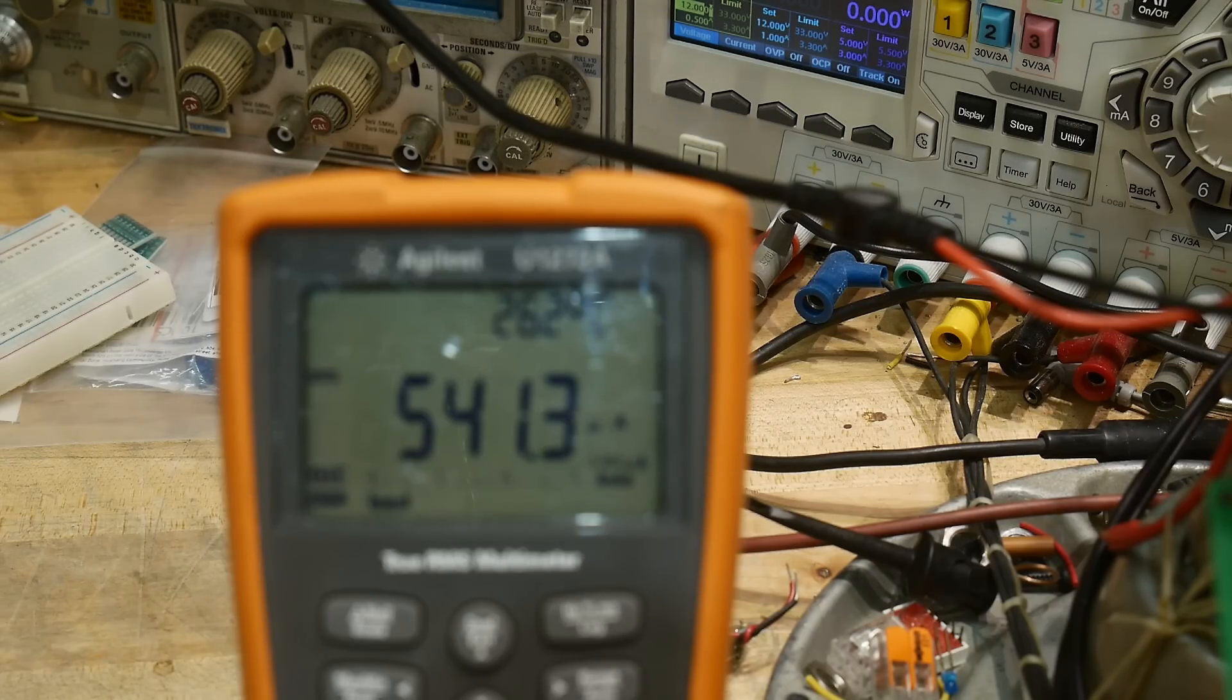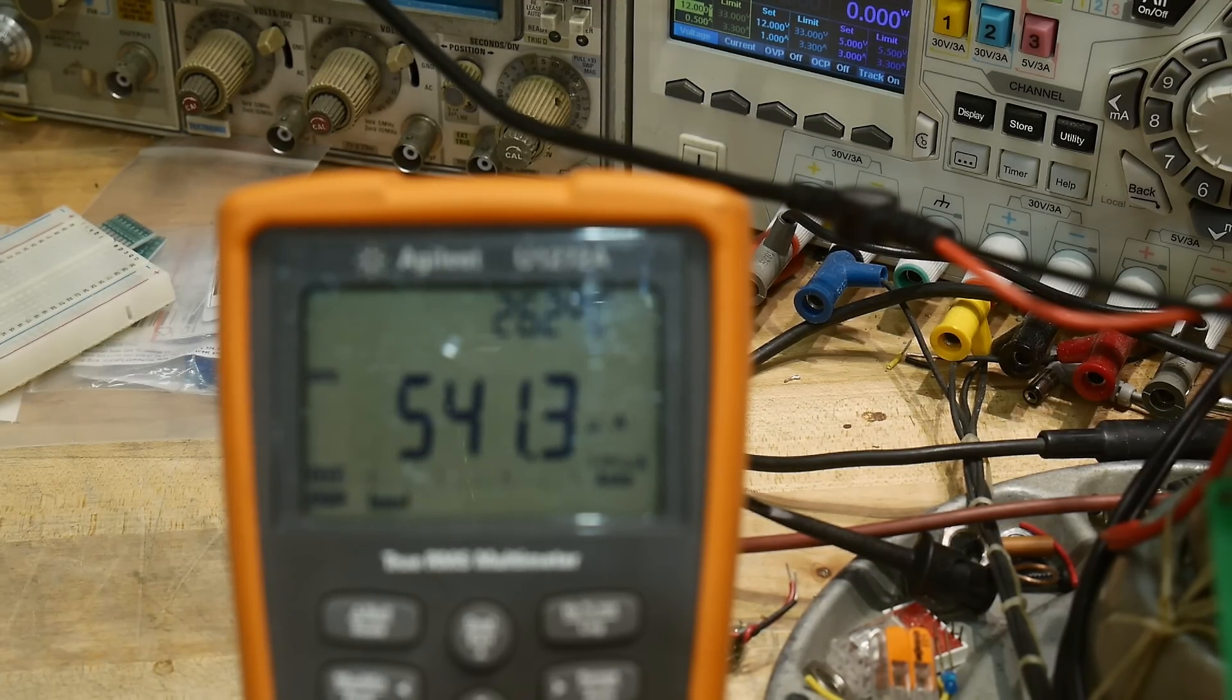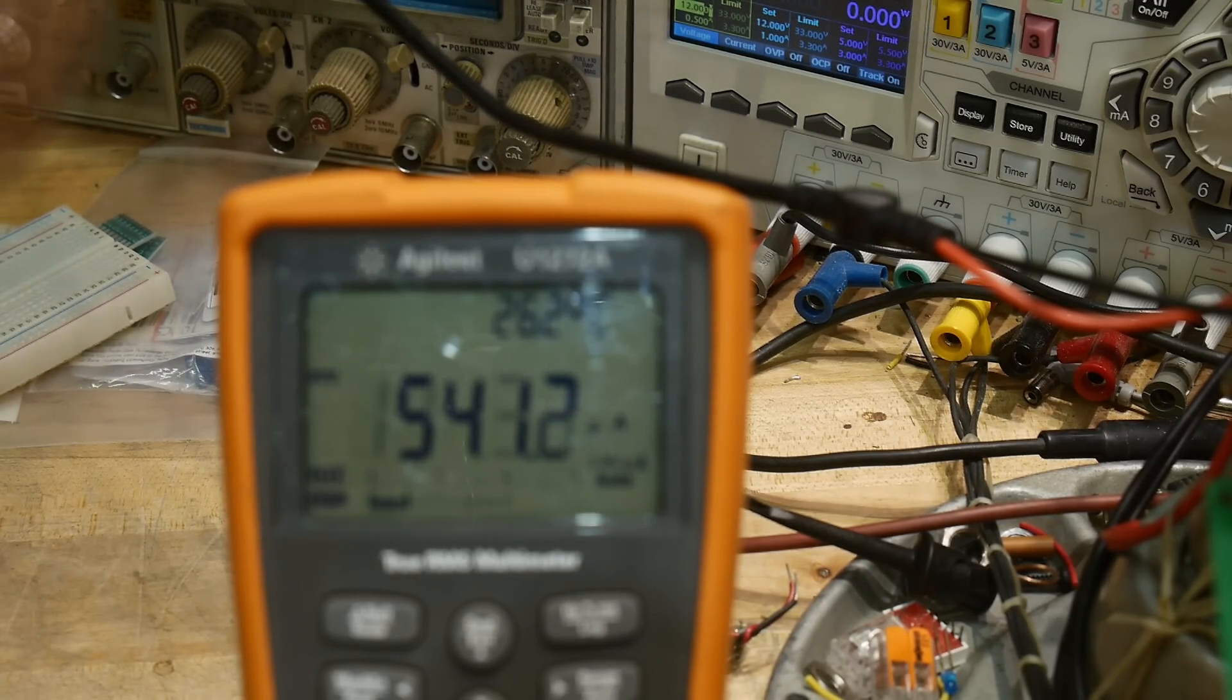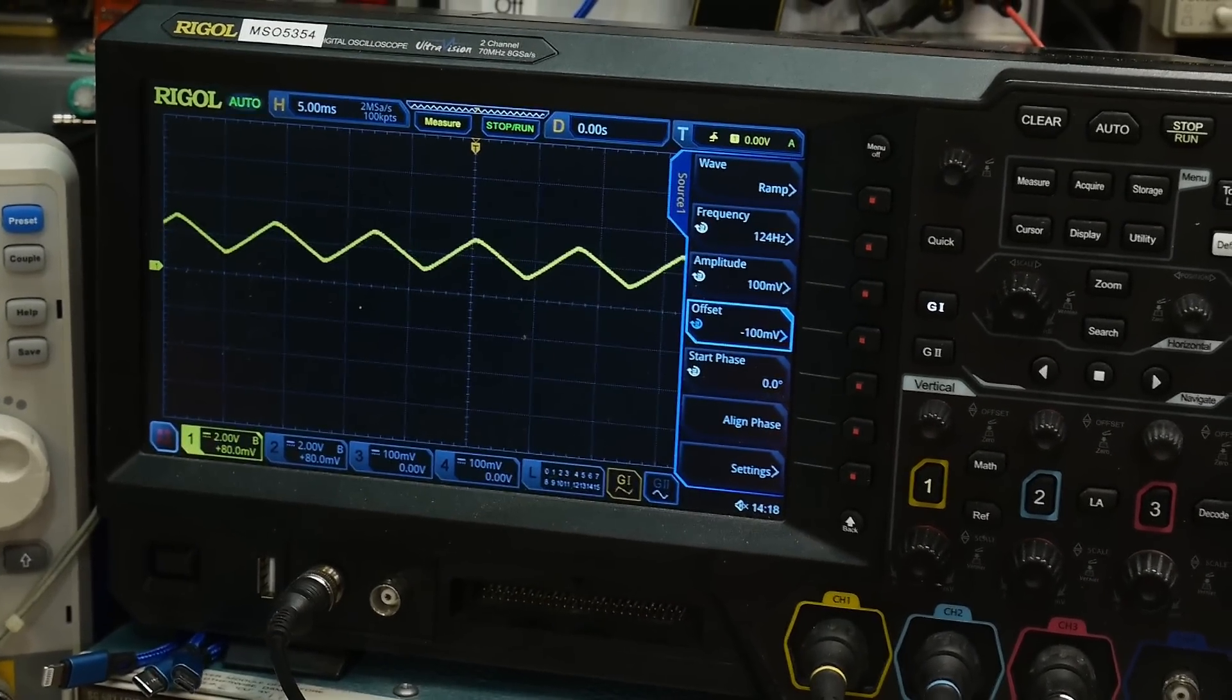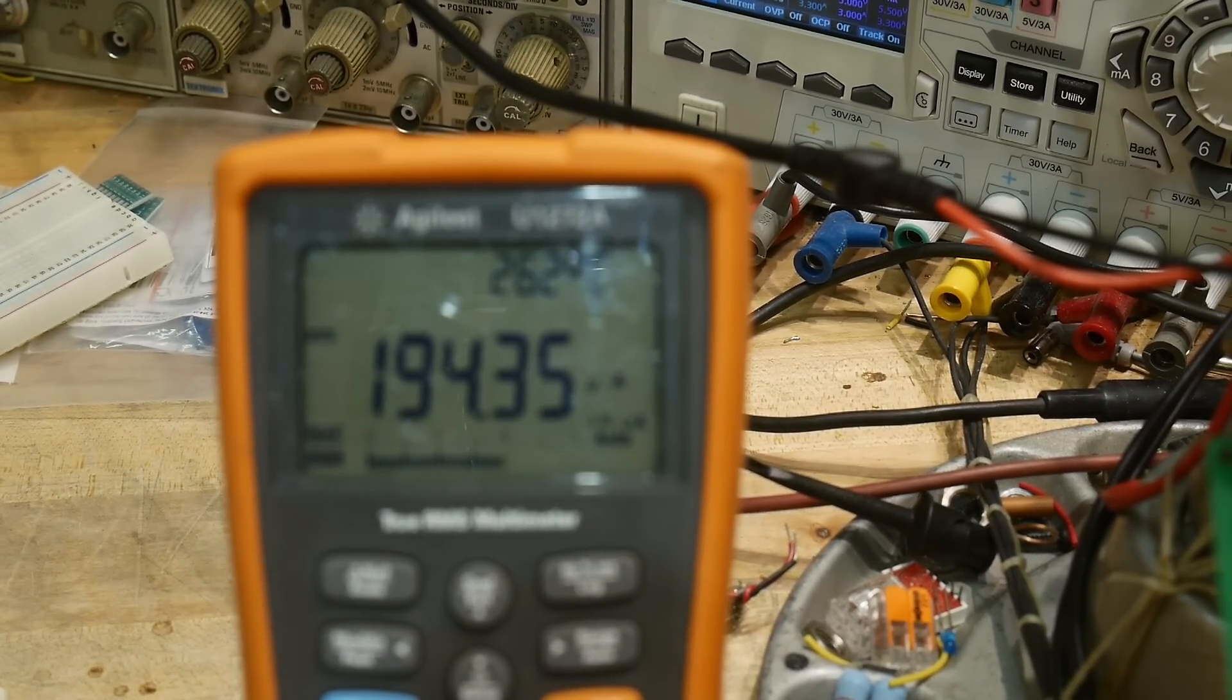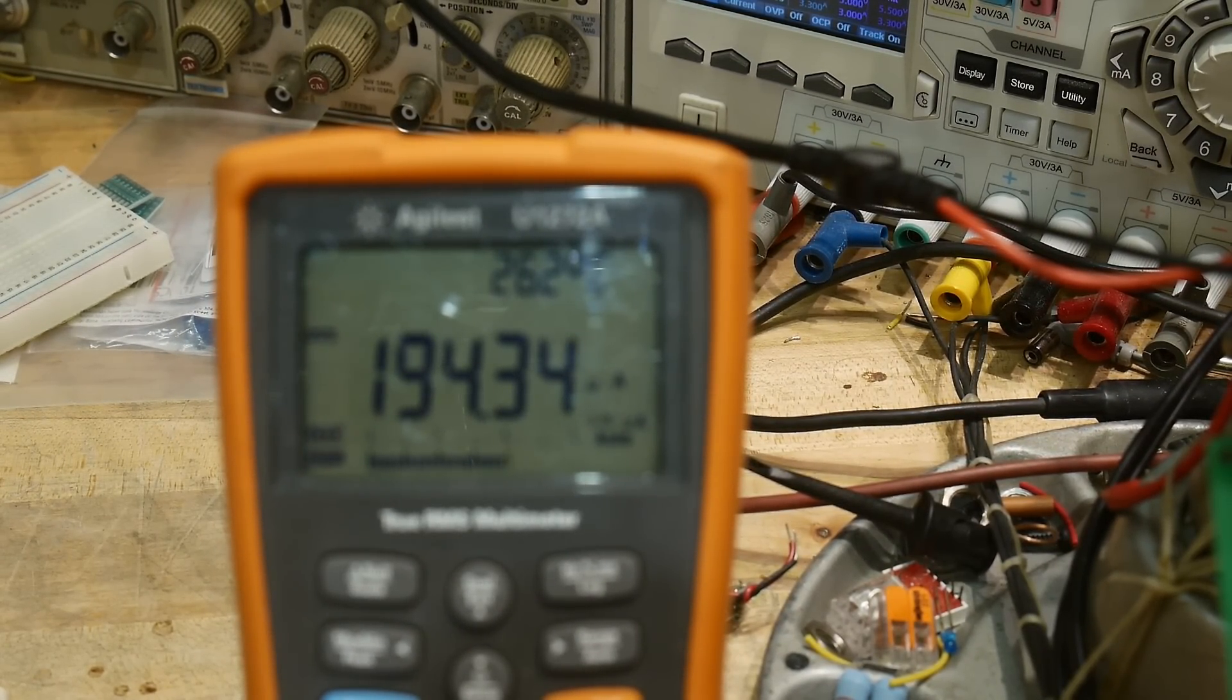So it is dumping some current inside the part. And now we're back to a happy place where we have 100 microvolts and we have 190 microamps of current.